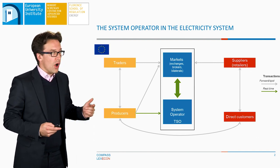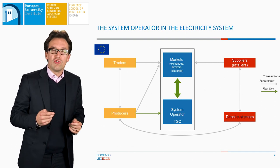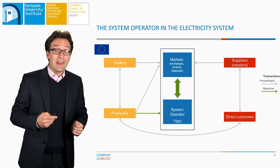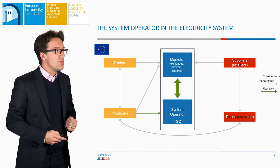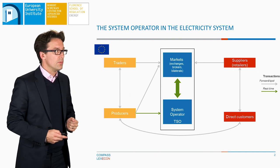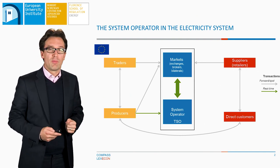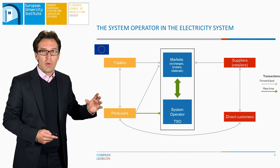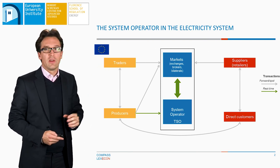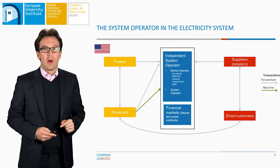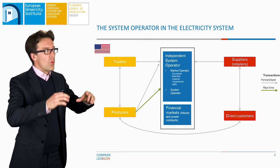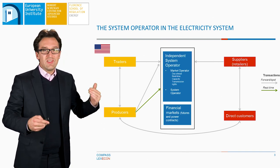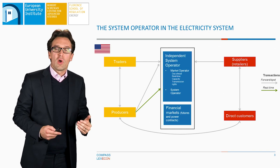The system operator in Europe takes the form of a transmission system operator. This is different from the US approach, where we have an independent system operator. In Europe, the transmission system operator is the owner and the operator of the network, and it is a separate body from the marketplaces. In the US, in contrast, with the independent system operator, we have in the same body the market operator and the system operator, which is distinct from the ownership of the transmission network.